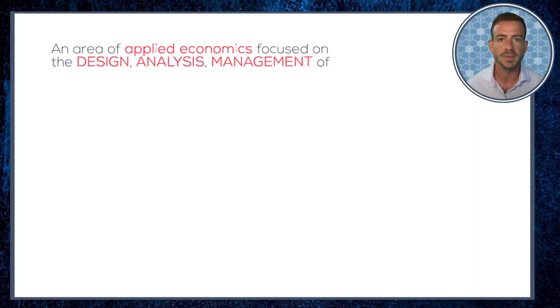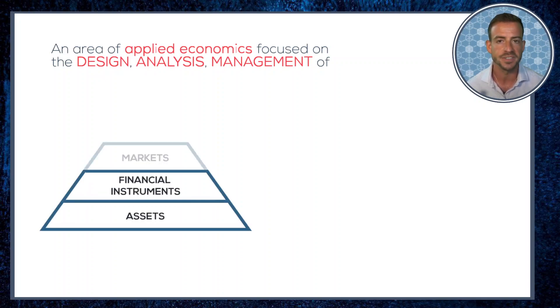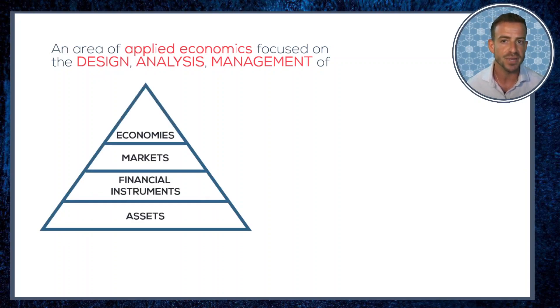So with all that said, it's time to stick my neck out and offer a definition of tokenomics that's quite different from most of what's out there at the moment. Tokenomics is an emerging area of applied economics that focuses on the design, analysis, and management of assets, financial instruments, markets, and economic systems that have been built with blockchain technology.